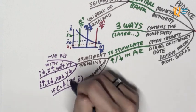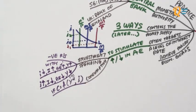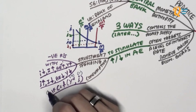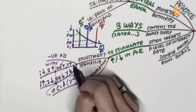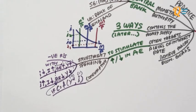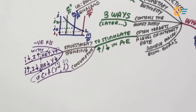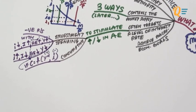We include interest rates in the consumption function only when the question states so. Disposable income has a positive relationship with consumption, and just like investment, consumption may have a negative relationship with interest rates. That is how affecting interest rates stimulates either an increase or a decrease in aggregate expenditure.